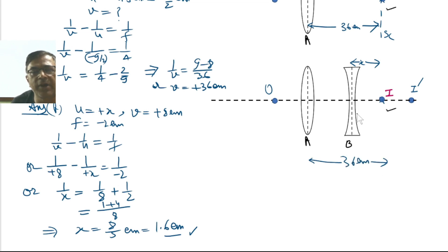And we have calculated this distance to be 1.6 centimeters, so the separation between these two lenses L should equal 36 centimeters minus 1.6 centimeters, which equals 34.4 centimeters.